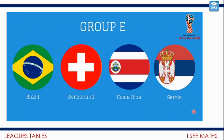We're going back to the 2018 World Cup. Group E involved Brazil, Switzerland, Costa Rica and Serbia. Each team plays each of the other teams, and the top two teams qualify for the next round. My first challenge: in Group E, how many matches must there have been? Remember, each team plays each other team once. Pause the video — how many matches?